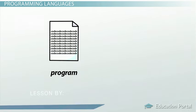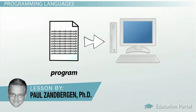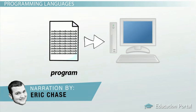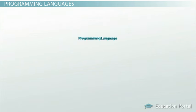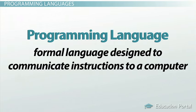A program is a set of instructions that tells a computer what to do in order to come up with a solution to a particular problem. Programs are written using a programming language. A programming language is a formal language designed to communicate instructions to a computer.